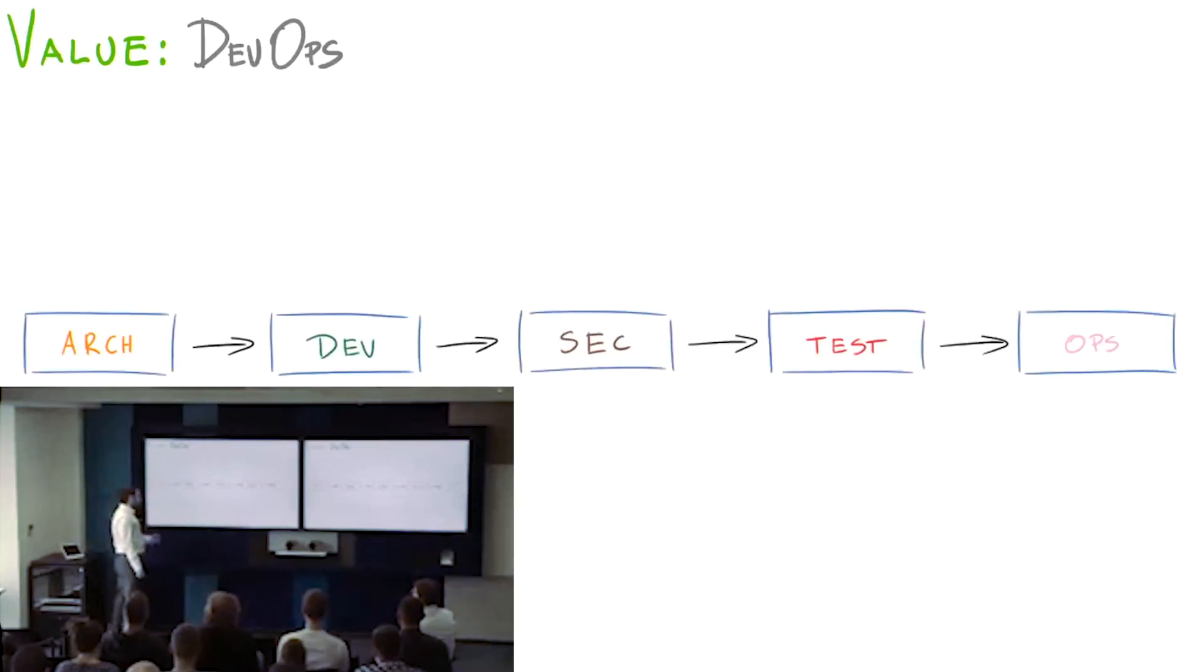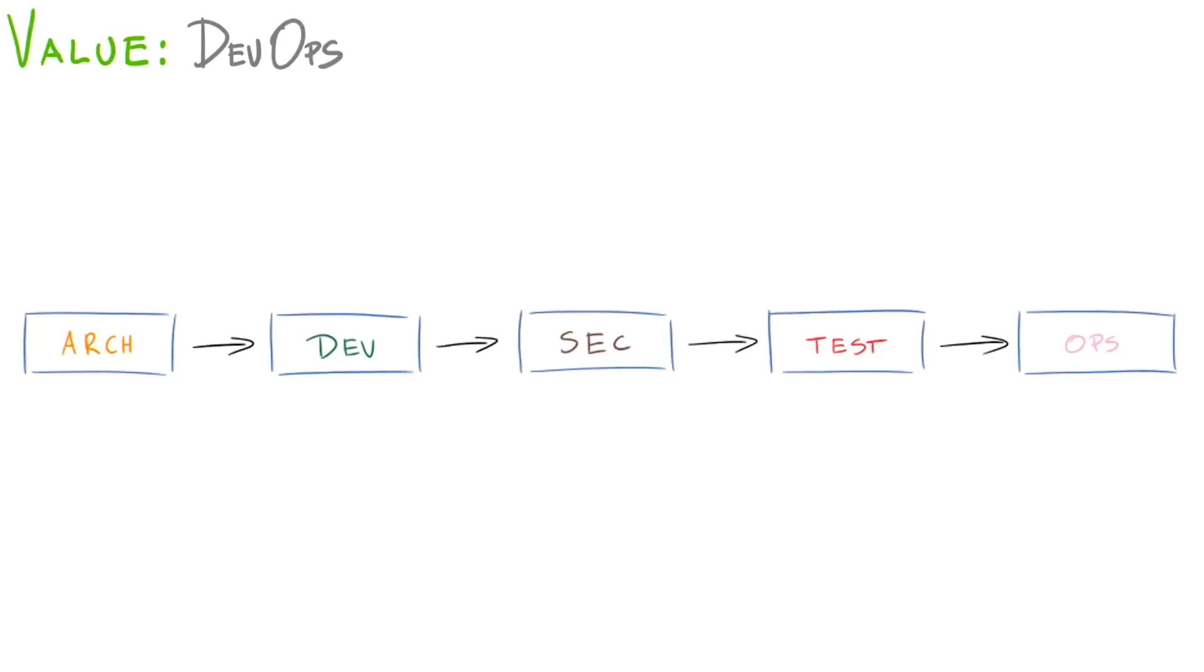What DevOps teaches us about this: DevOps teaches us that this whole value stream that creates value for the customer should be owned by a single team. There should be a team that can do their own architecture, development, security, testing, and operation. This is what DevOps teaches us.